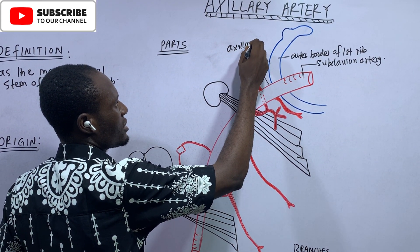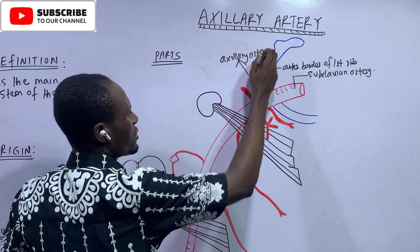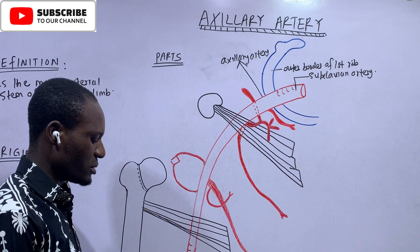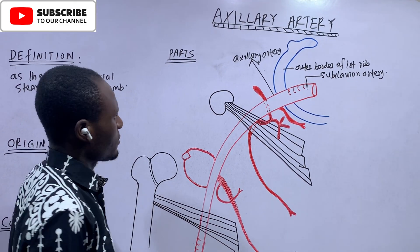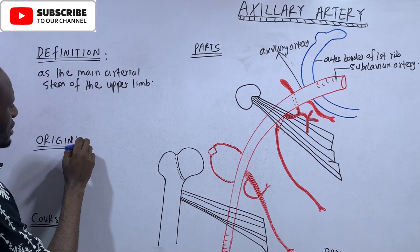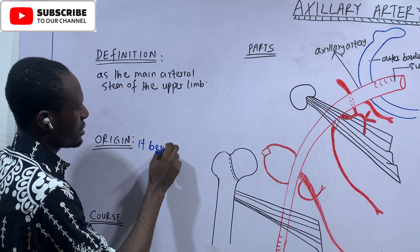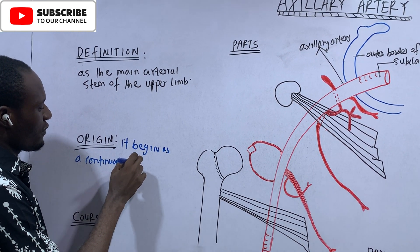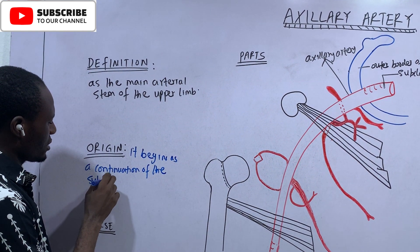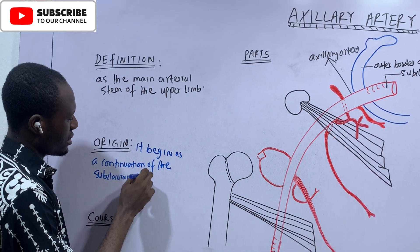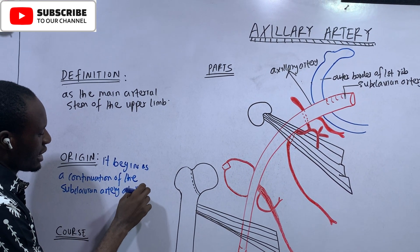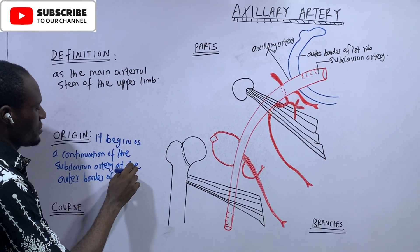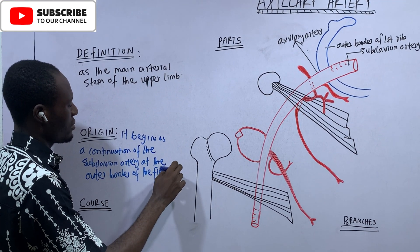So this is the axillary artery — the whole of this artery down here is the axillary artery, and it is the main arterial stem of the upper extremity. The origin begins as a continuation of the subclavian artery at the outer border of the first rib. That's the origin.